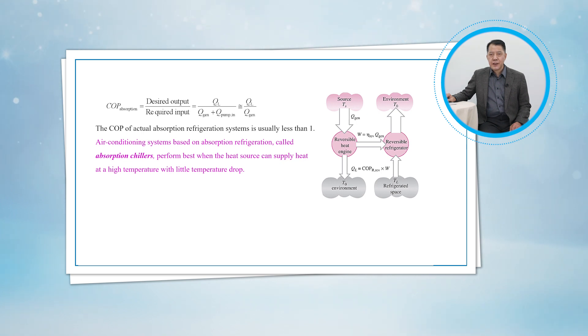Air conditioning systems based on absorption refrigeration, called absorption chillers, perform best when the heat source can supply heat at a high temperature with little temperature drop.